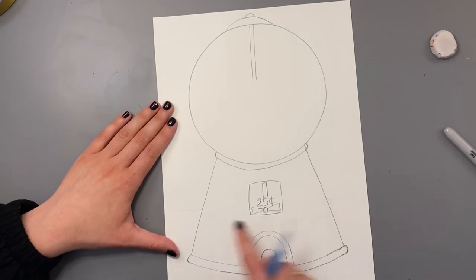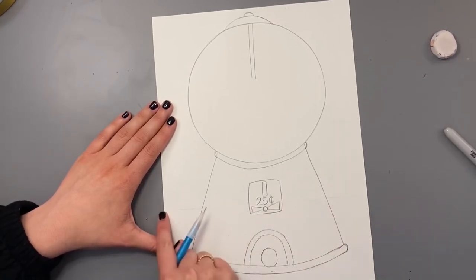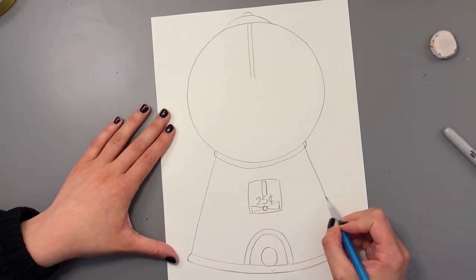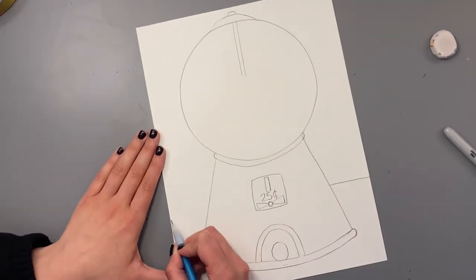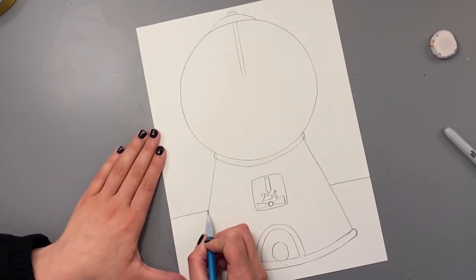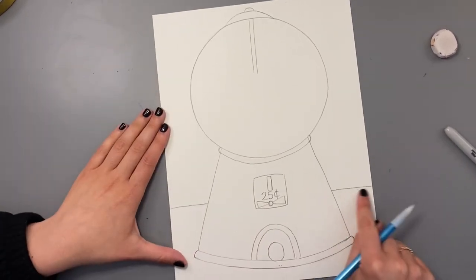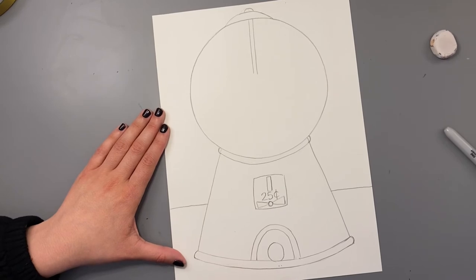The next thing we're going to do is draw a horizon line behind the gumball machine. So this is the surface that the gumball machine is sitting on. So I drew two horizontal lines on each side.